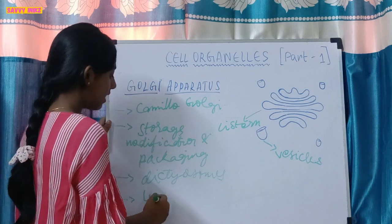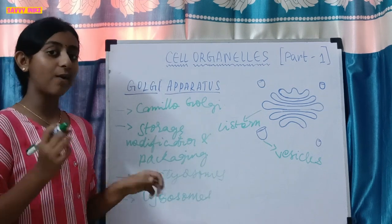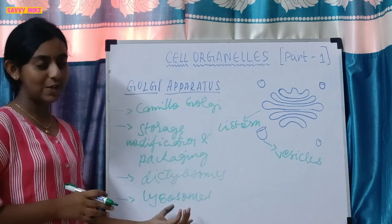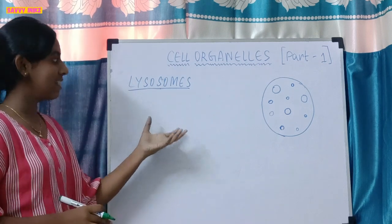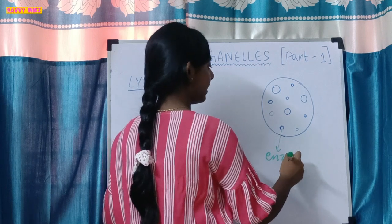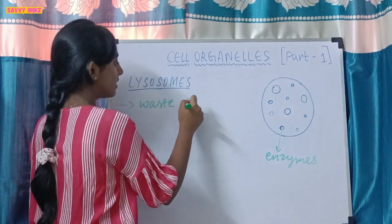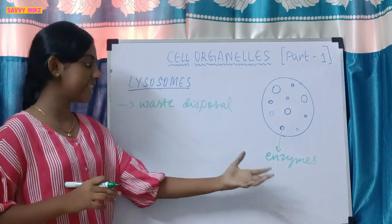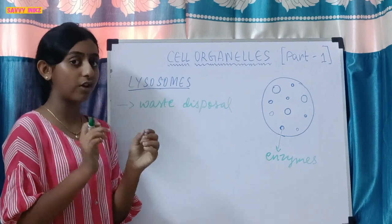The Golgi apparatus also involves in the formation of lysosomes, which is the third cell organelle we will learn today. Lysosomes are sac-like structures that contain enzymes. These enzymes are made by the rough endoplasmic reticulum. The lysosomes are involved in the waste disposal of the cell — if any cell organelle is dead or damaged, the lysosomes will release their digestive enzymes to digest and remove those organelles.